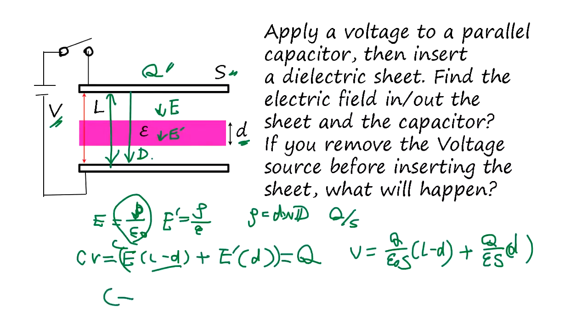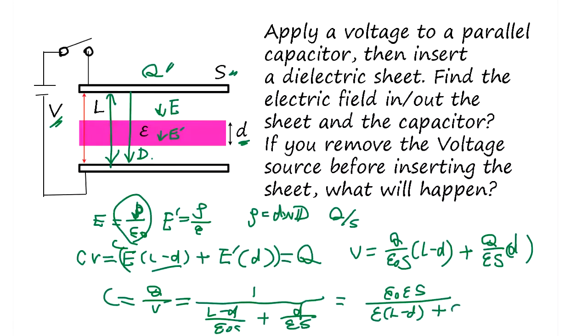So, since C is Q over V, we know Q is going to disappear. So, it's going to be, 1 over L minus D, Epsilon zero S, plus D, Epsilon S, equals, Epsilon zero S, now, Epsilon L minus D, plus Epsilon zero D. So, that's the capacitor.